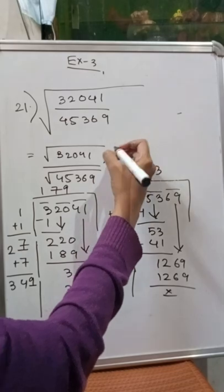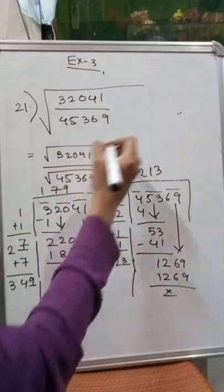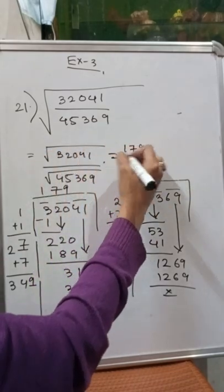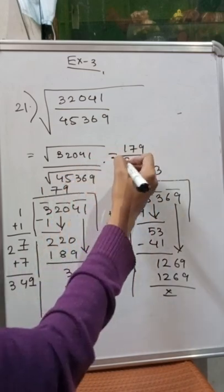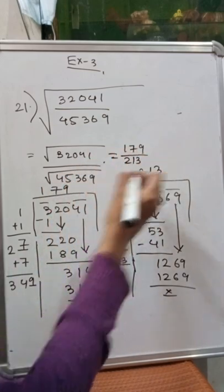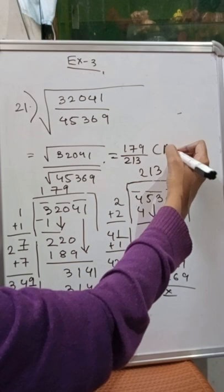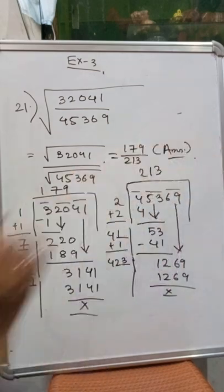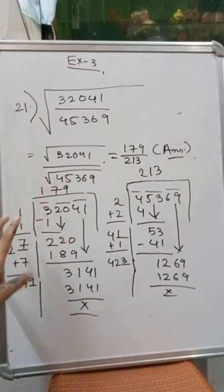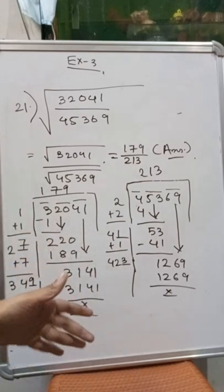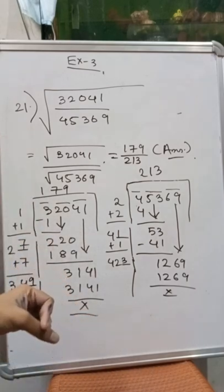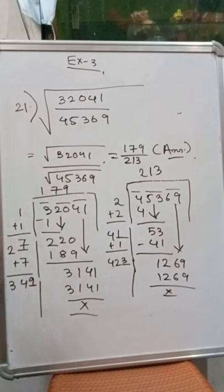The square root of 32041 is 179 and the square root of 45369 is 213. So the final answer is 179 over 213. This is the easier method — don't try to convert this type of sum into a decimal fraction and then find the square root. Solve it in this manner as it is much easier. I hope you have understood. Thank you.